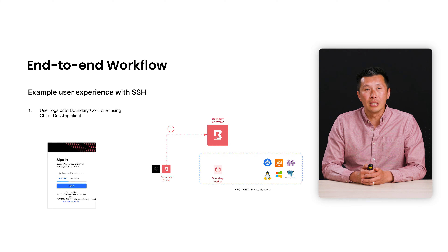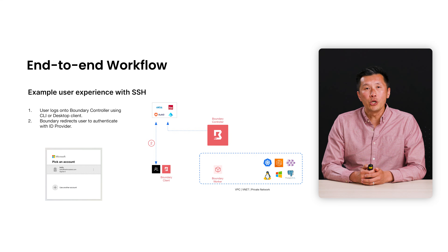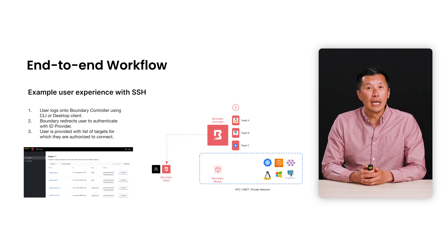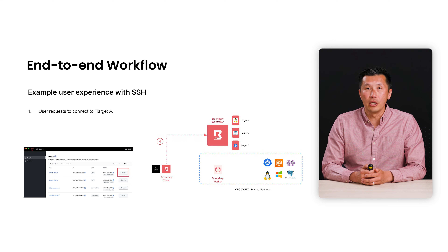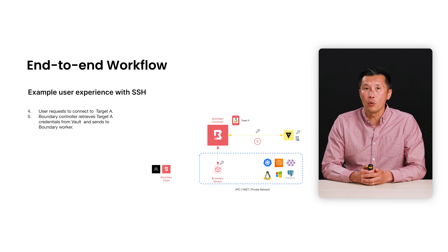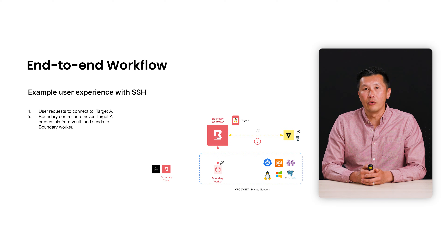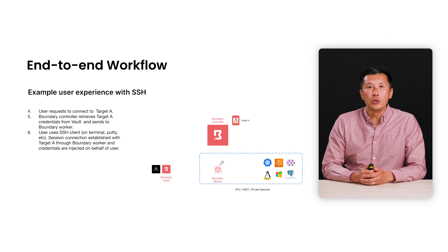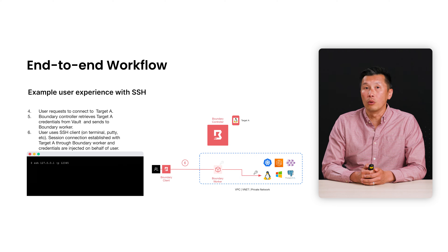I'm also showing the user selecting Azure AD as the identity provider. Boundary will redirect them to Azure to authenticate. Once authenticated, they will be given a list of targets they are authorized to connect to. Once they make their selection, the Boundary controller will communicate with Vault to fetch the corresponding credential for the particular Linux host. The credential is then sent down to the Boundary worker, and finally the user can use their favorite SSH client — via the terminal or PuTTY — to connect to their target using the loopback IP and port number provided by Boundary.